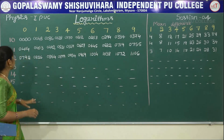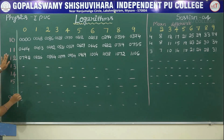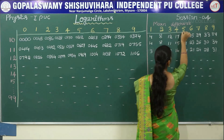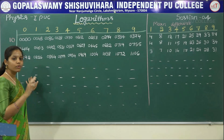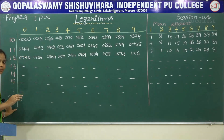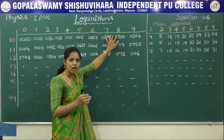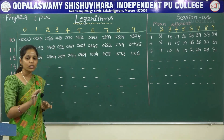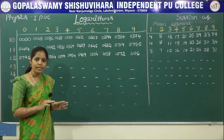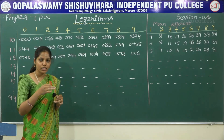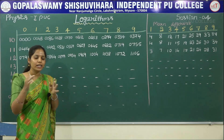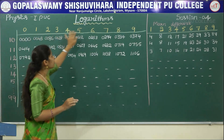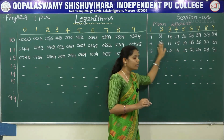This is the log table. Here, this is the first column, this is the first row, and this is the mean difference column. For a given number, the first two digits are represented by the first column, the third digit is represented by the first row, and the fourth digit is represented by the mean difference column.